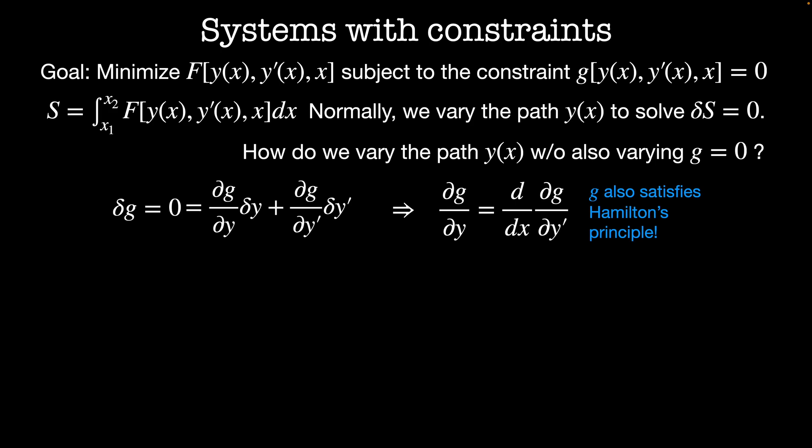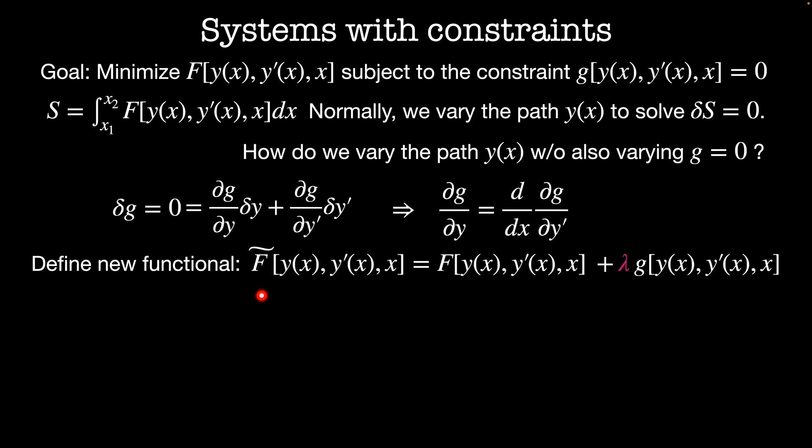Let's define a new functional. Let's call it f tilde and this is a functional of y, y prime, and x. And this is given by our original functional plus lambda times g. Remember that g is equal to zero, so no matter what we multiply it by, this term is going to be equal to zero. So we're still finding a stationary solution for our original functional f. But we know that since delta f is also equal to zero, then there is a stationary solution for f tilde that guarantees that both the constraint is equal to zero and f is minimized.